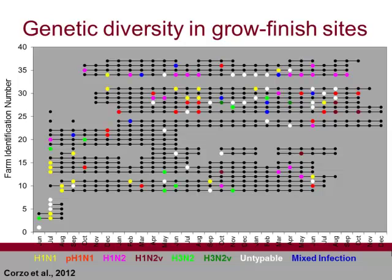The most telling slide illustrating what happened in those wean-to-finish populations: each dot represents every time a sample was taken. Black means the results were negative, but color shows that there was virus, and the different colors show the virus was different every time. For example, one farm tested positive for H1N1 — yellow — and two months later it was H1N2 — pink — and so on. That really is the challenge of influenza: all these new variants, as the influenza virus likes to mix and match and come up with new viruses through reassortment.